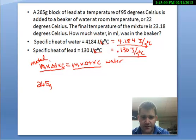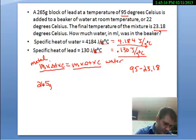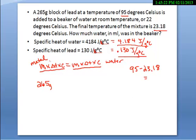Alright, so 265 grams times the change in temperature. And the change in temperature, the metal block starts at 95 degrees, and the final temperature of the mixture is 23.18. So 95 minus 23.18 equals 71.82. So the metal changes in temperature by 71.82 degrees. And the specific heat of lead is 0.13 joules per gram. Again, I have to make sure that the units here, grams, matches the units here, which is grams. If this was 265 kilograms, I would have used 130 joules.